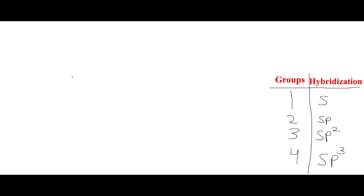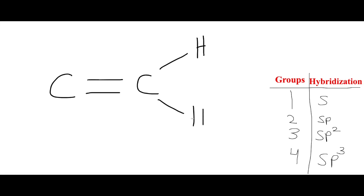For example, if we have two carbons and we have a double bond in the middle attached to two hydrogens. So this is where the groups in hybridization come into play. If you have one group, meaning one bond, it's S. If you have two groups, it's SP. If you have three groups, it's SP2. By having four groups, it's SP3.